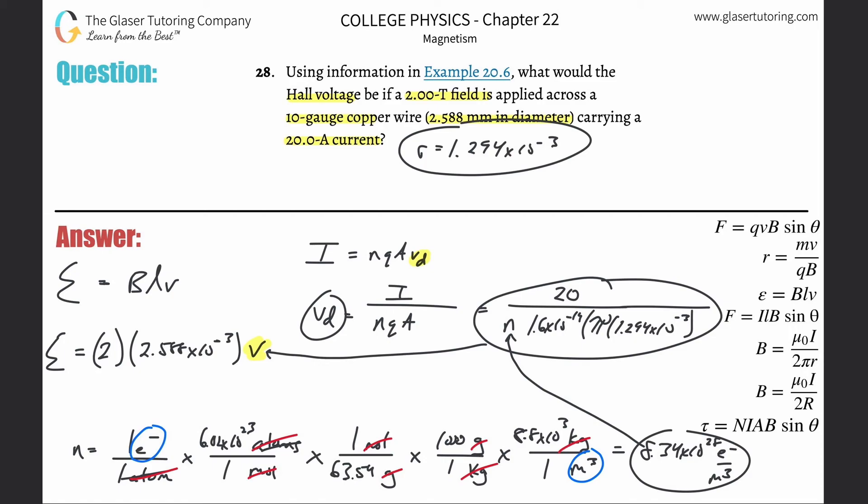Now throw that into the Hall equation. Multiply that answer by 2 and multiply it by 2.588 times 10 to the minus 3. So I get a Hall voltage of about 1.48 times 10 to the minus 6th, and that'll be in terms of volts.